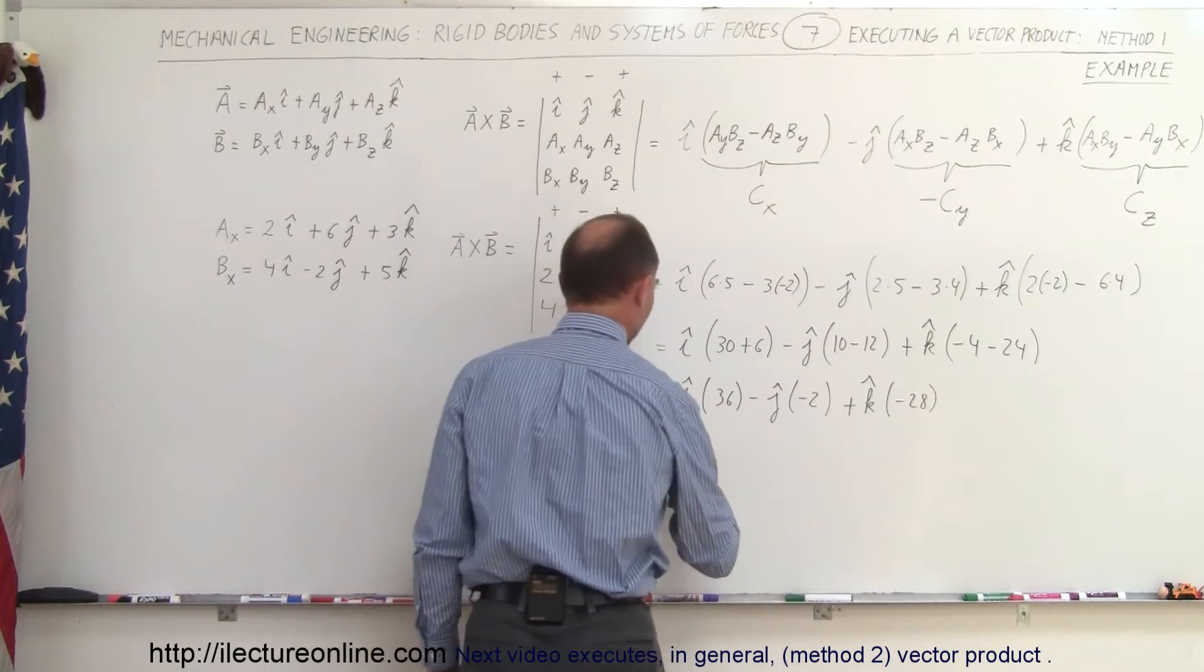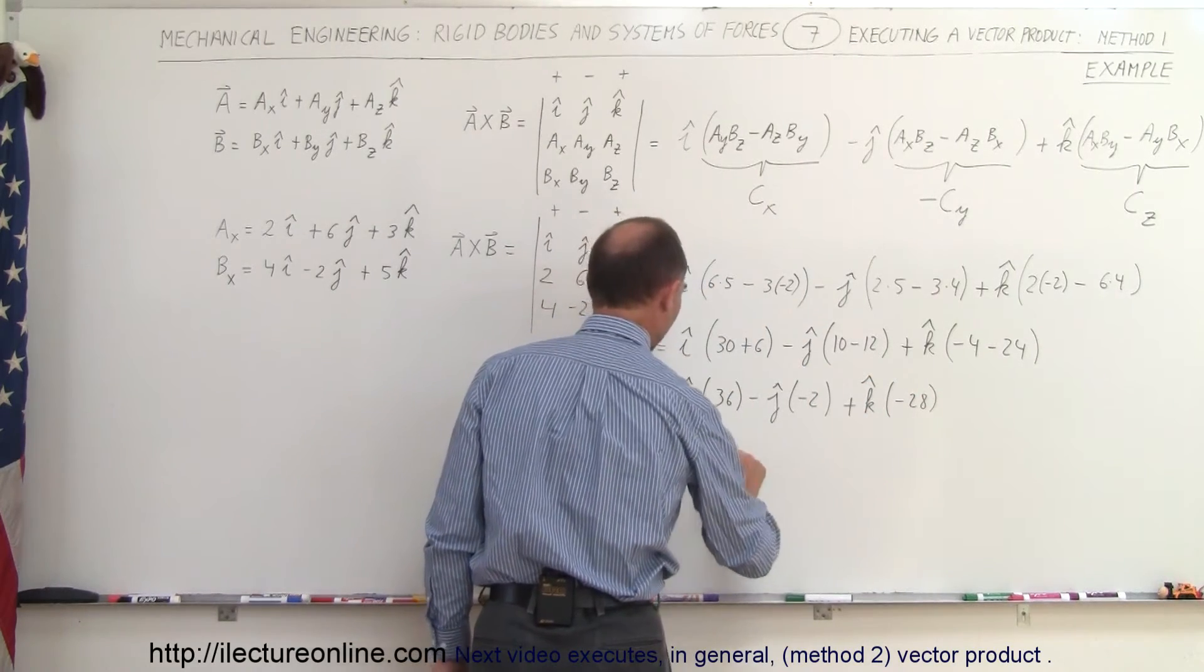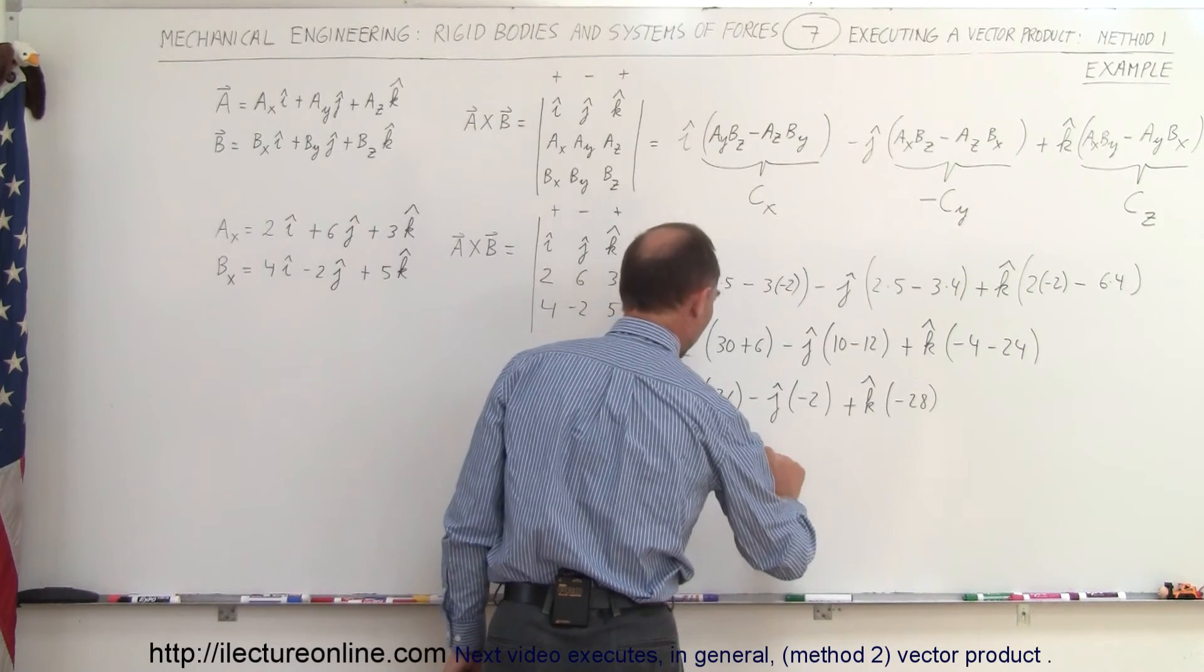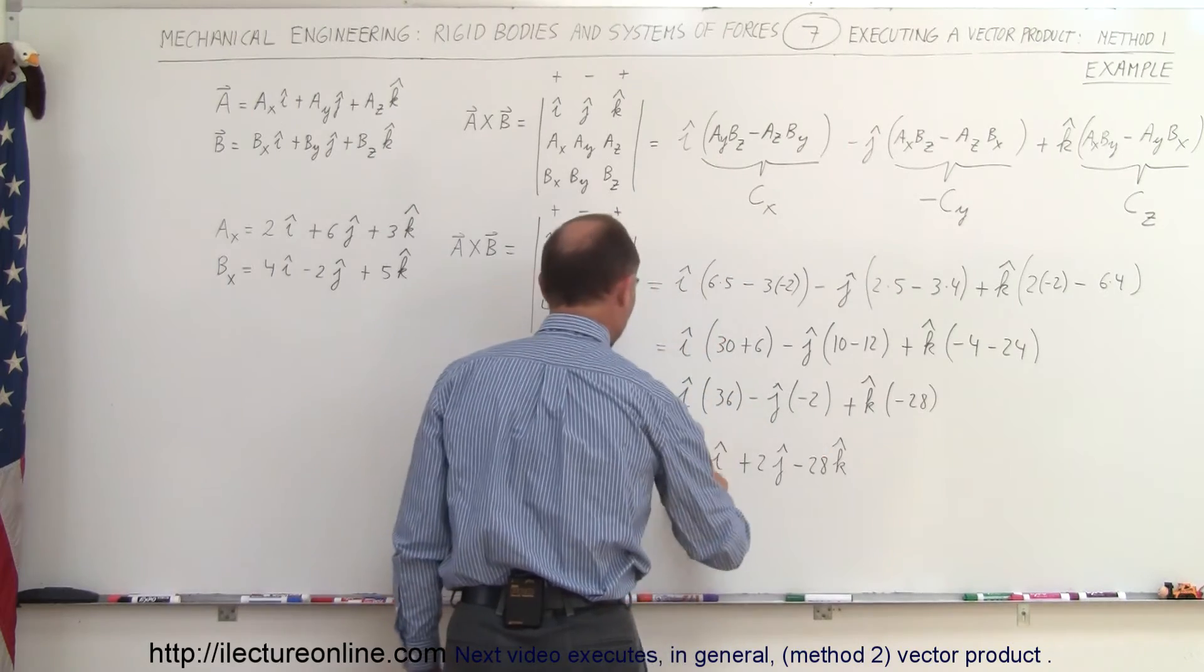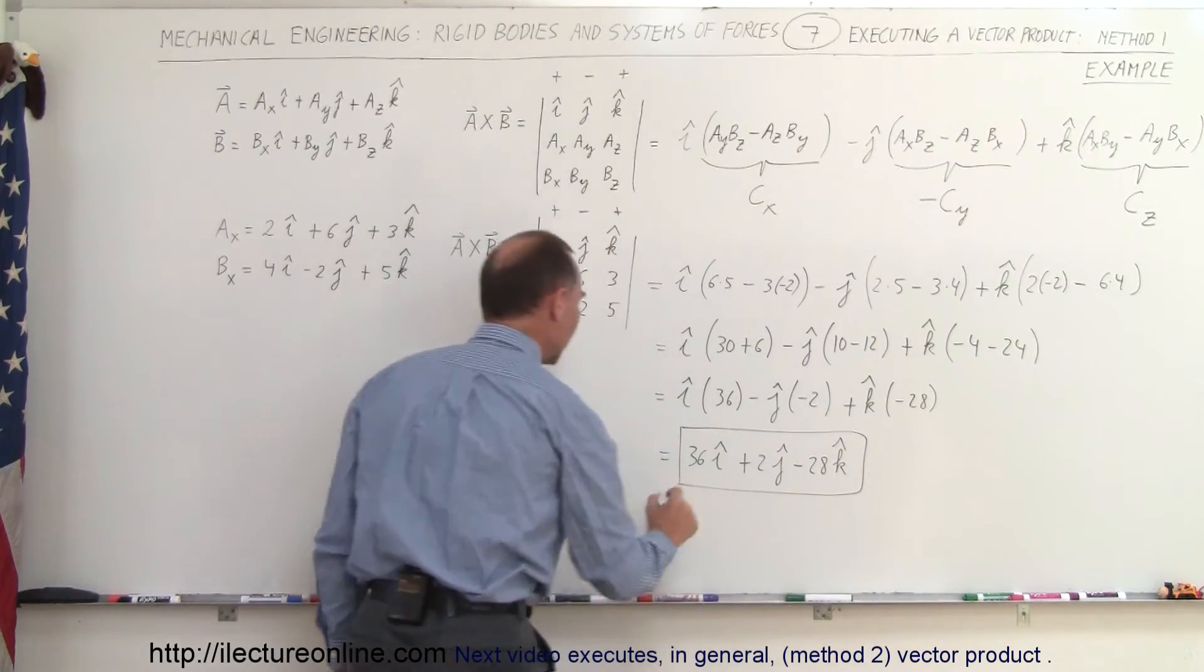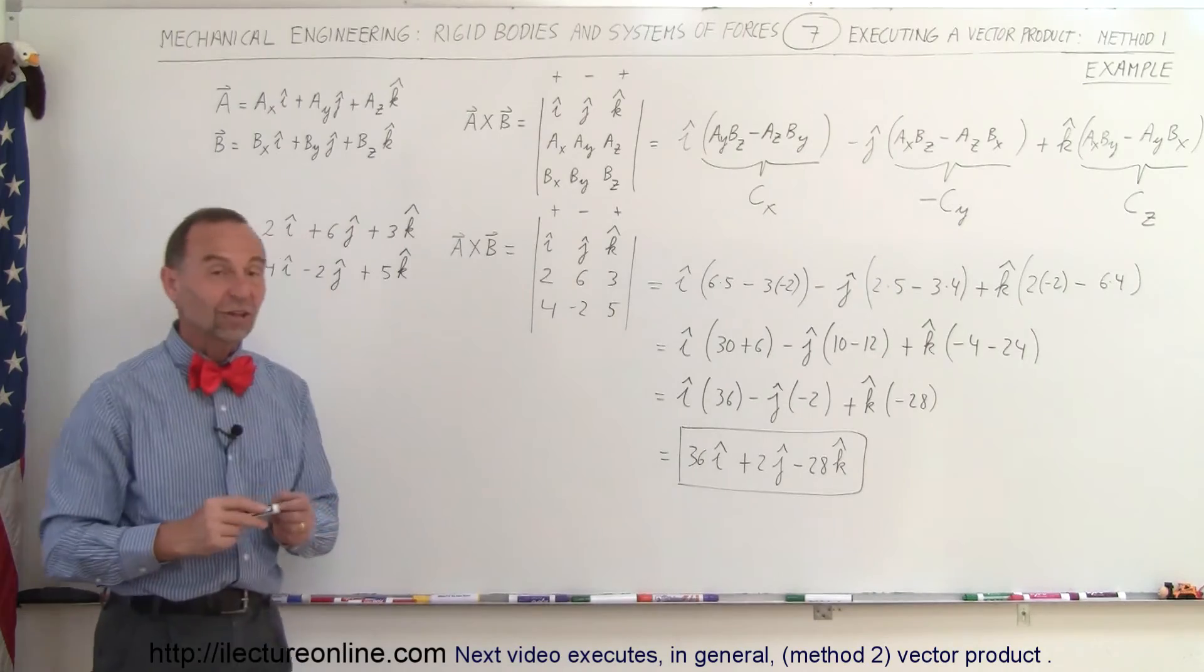And simply distributing the signs, this is therefore equal to 36I, and that would be plus 2J, and minus 28K. And that would be the result of the vector product of vectors A and B.